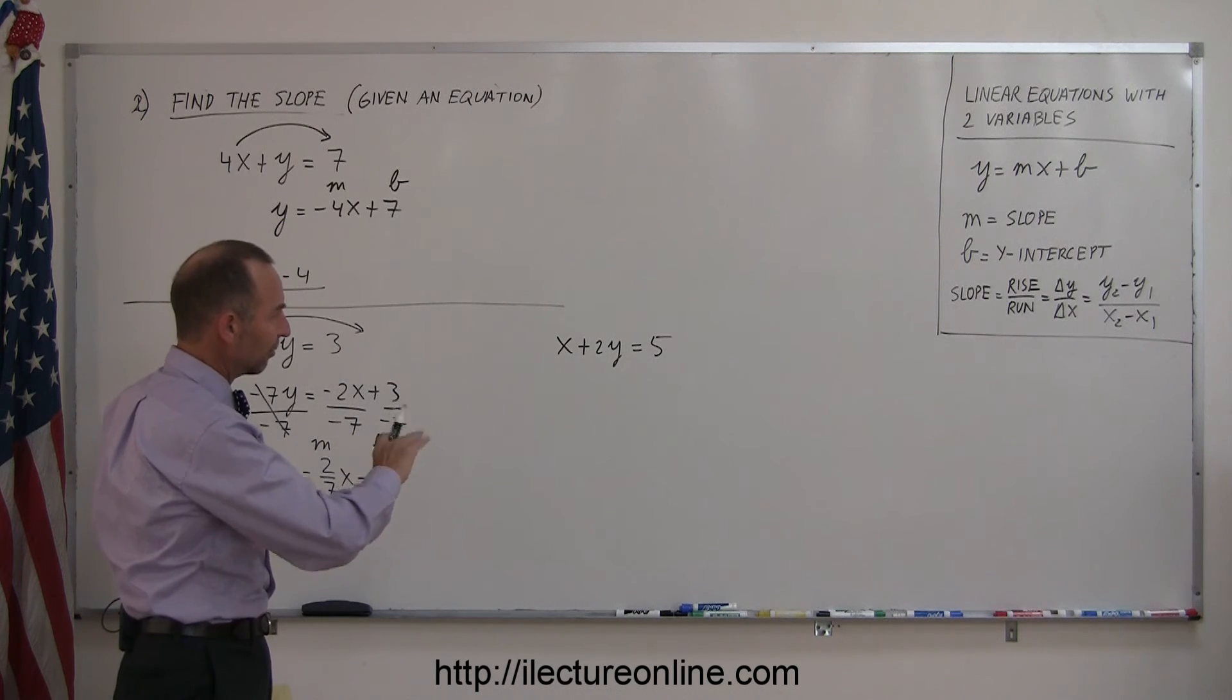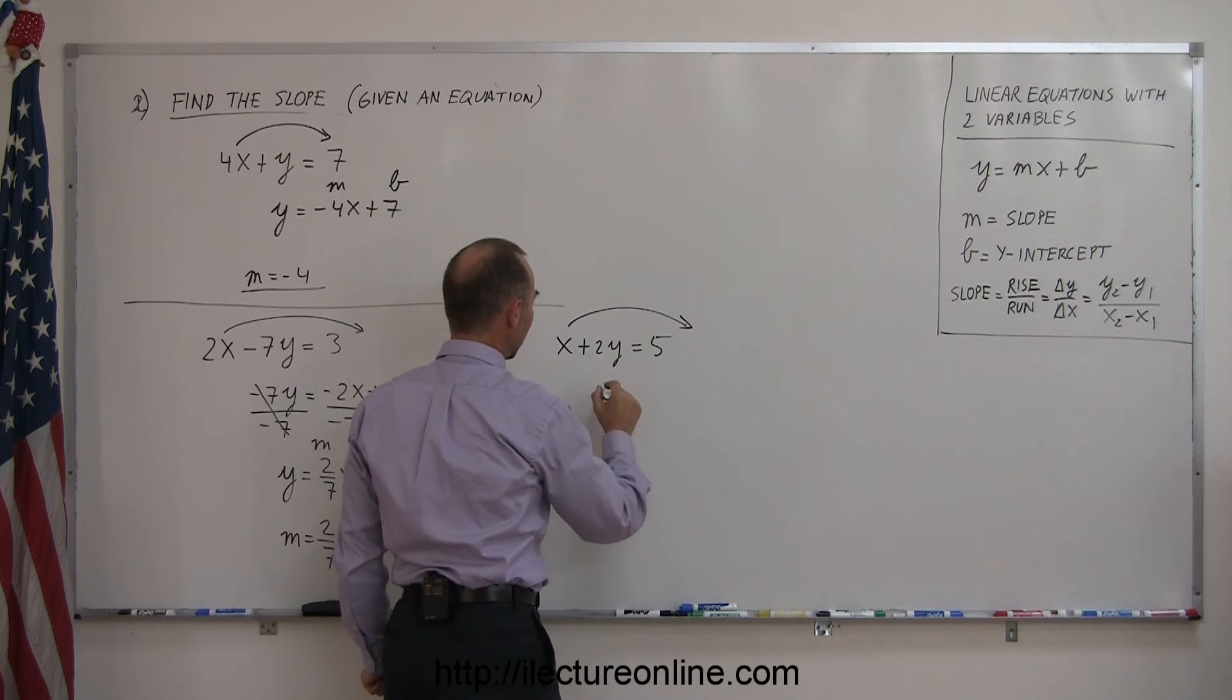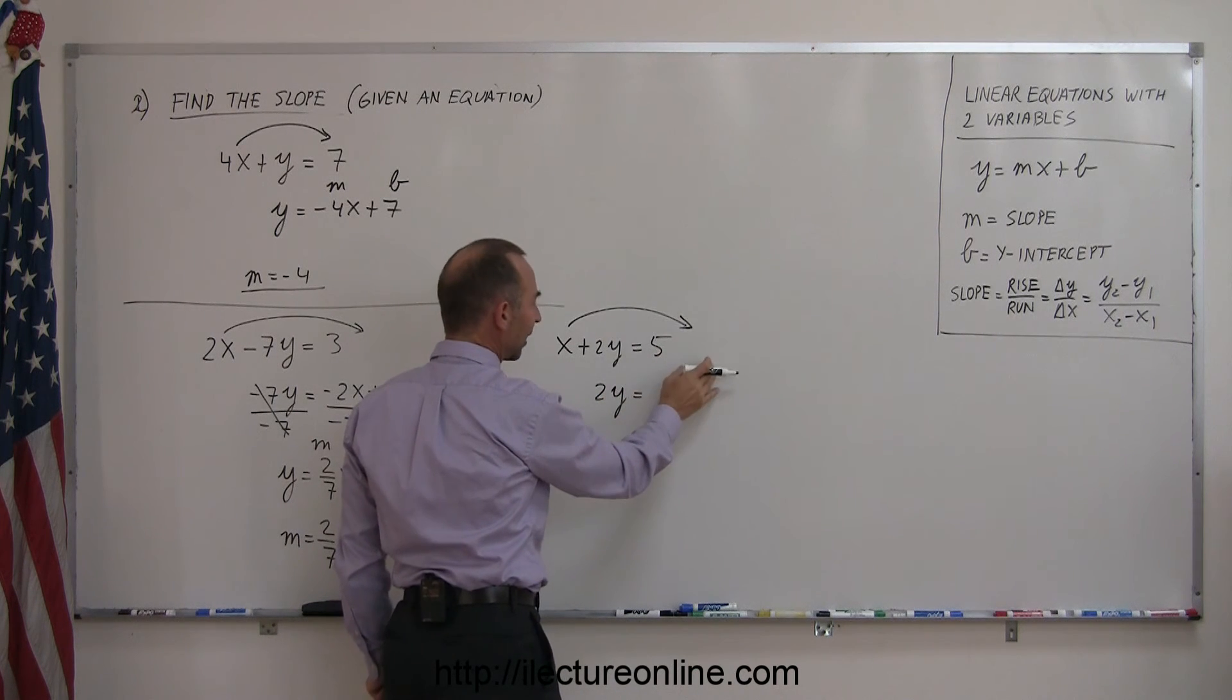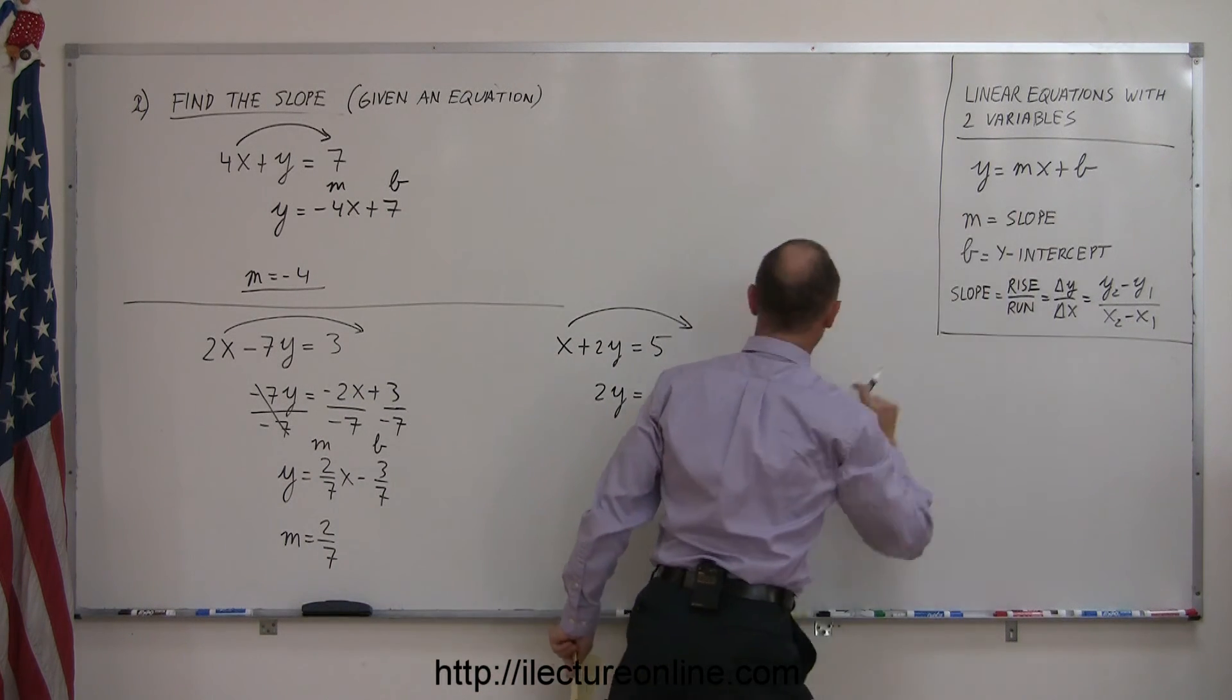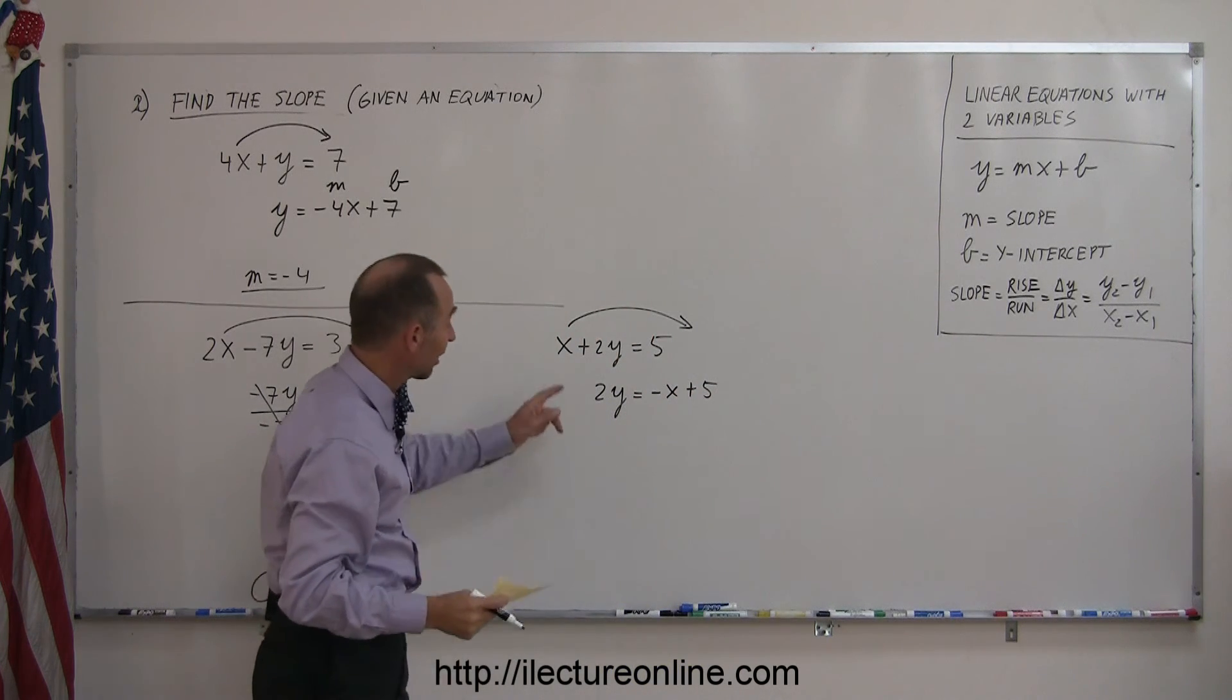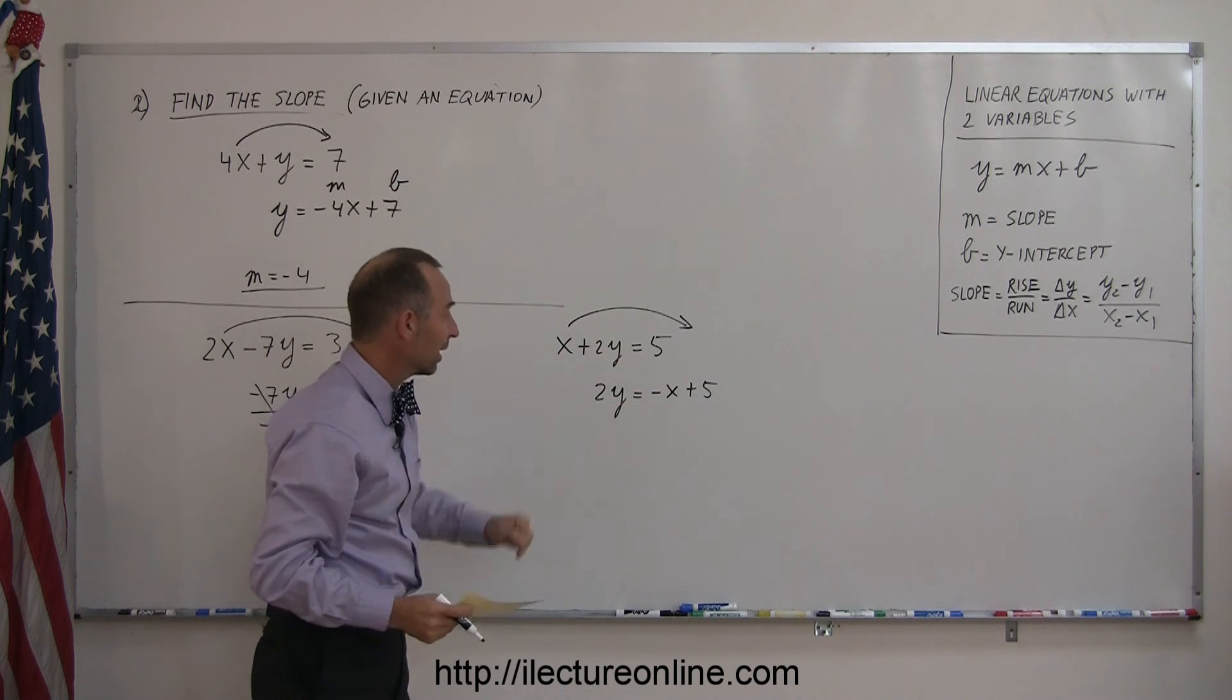Again, all the y's should be on the left side, everything else on the right side. So let's move our x over here. So we have 2y equals—and instead of writing it as 5 minus x, because you could, I would like to write the x first because I want to have this exact format, so I'll write it as minus x plus 5. Remember, when we cross the x over the equal sign, we must change the sign from positive to negative.